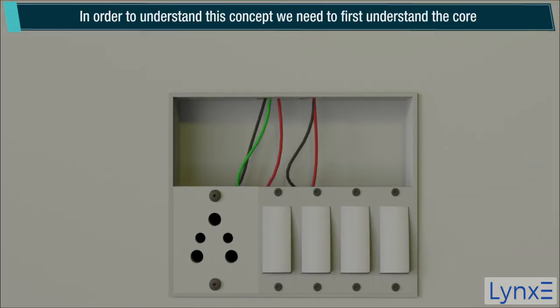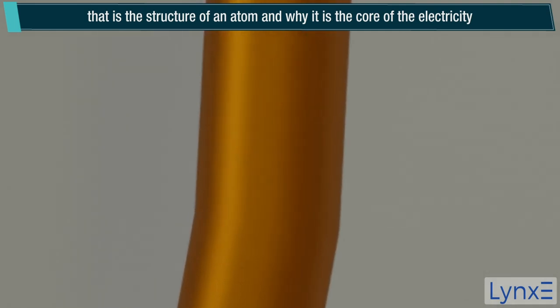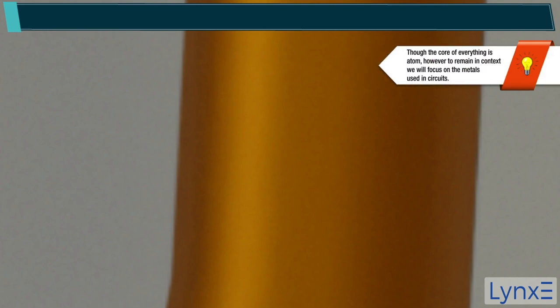In order to understand these concepts, we need to understand the core, i.e. the structure of an atom and why it is the core of the electricity. Note, though the core of everything is atom, however to remain in context, we will focus this on the metals used in circuits.